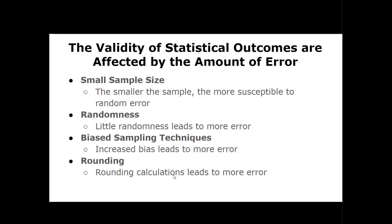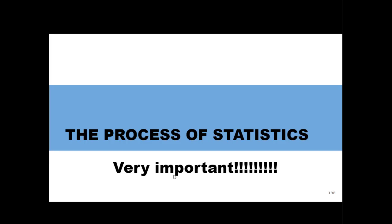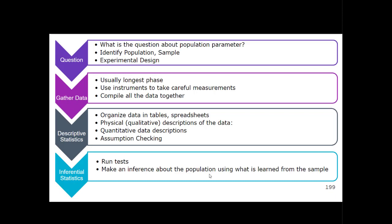Let's quickly talk about the process of statistics, because this is going to be really important moving forward. The statistical process has four discrete steps. The first is always the question. The statistical process always starts with a question about the population — write this down. The question is always in terms of the population, not the sample, and you're asking about a statistic about the population, which is called a parameter — whether it's a proportion, a mean, things like that.